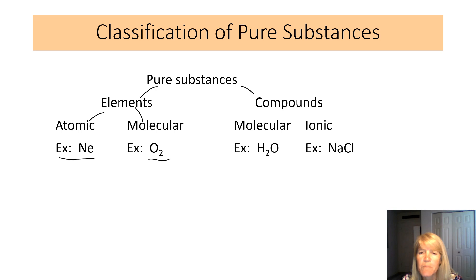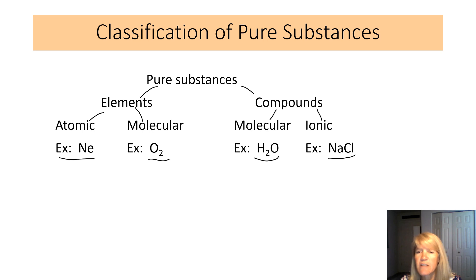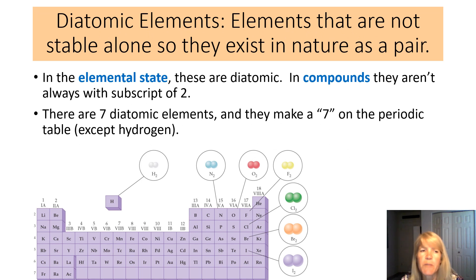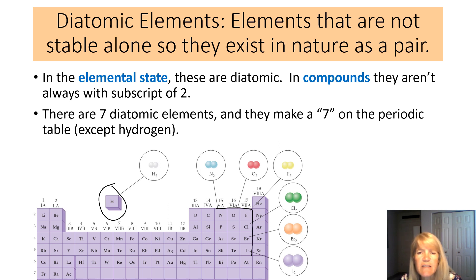Compounds can also be broken into two categories: molecular and ionic. An example of molecular is water, H₂O; an example of ionic is salt, sodium chloride. In the elemental state, some elements are diatomic — meaning two atoms together. There are actually seven diatomic elements, and they form a seven shape on the periodic table: nitrogen, oxygen, fluorine, chlorine, bromine, iodine, and hydrogen.